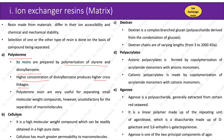Another type of resin that can be used is cellulose. It is a high molecular weight compound which can be readily obtained in a high pure state. Cellulose has much permeability to macromolecules. Resin can also be made from dextran, which is a complex branched glucan — a polysaccharide derived from the condensation of glucose. Dextran chains are of varying length from 3 to 2,000 kilodaltons.